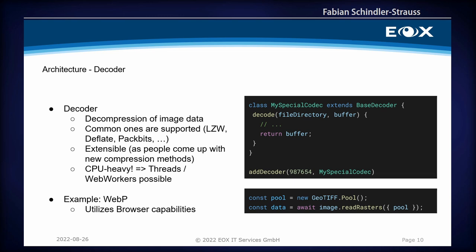Another important thing is decoding. geotiff.js uses a plug-in based system here, because there's a finite set of specified compression algorithms you can use, but as we've seen today, new ones can always be invented. So you can define your own codec or compression algorithm, implement it, and specify the number under which it shall be registered — which is then looked up by the GeoTIFF. This is why it's composable and extensible.